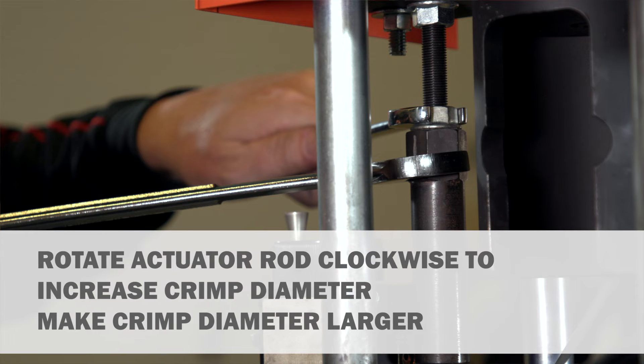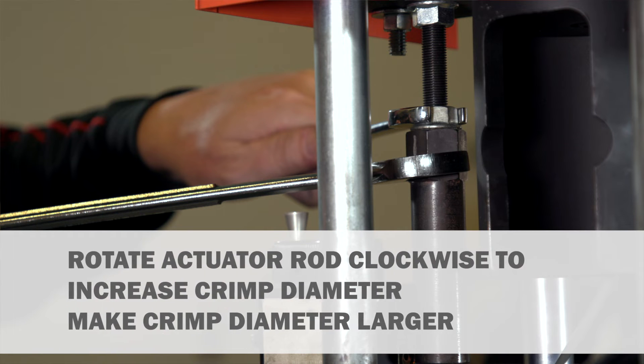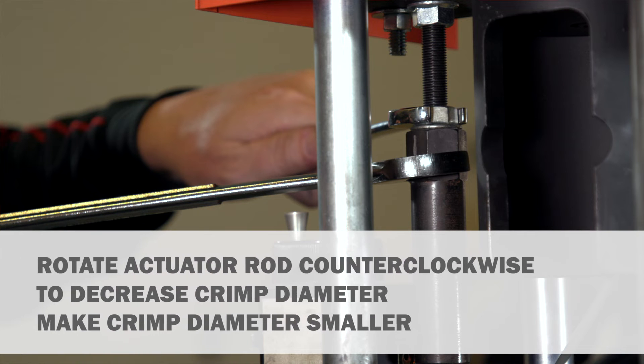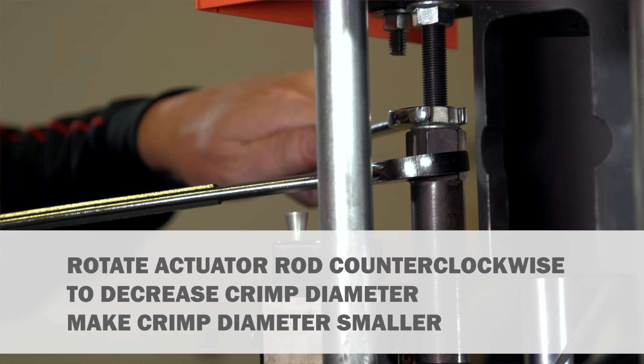Rotate the actuator rod clockwise to increase crimp diameter, that is to make the crimp diameter larger, or rotate it counterclockwise to decrease crimp diameter, that is make the crimp diameter smaller.